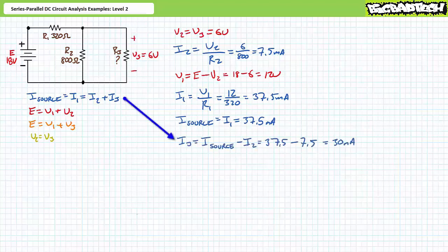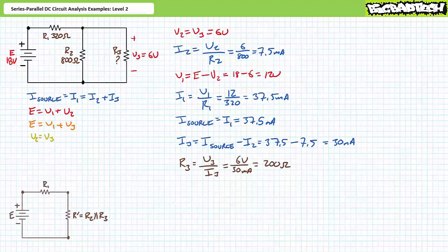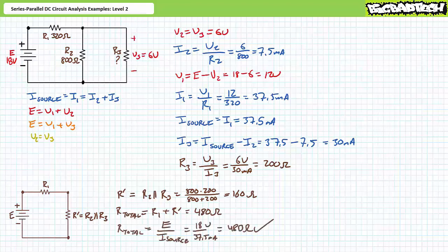An algebraic rearrangement of the Kirchhoff's current law equation solving for unknown current I3 demonstrates that I3 is the remaining 30 milliamps. An application of Ohm's law solving for unknown resistance R3 demonstrates that R3 is 200 ohms. As a means of checking our work, we can take R2 and R3 in parallel — a simplification I'm calling R prime — which has a value of 160 ohms. R prime is in series with R1, presenting a total resistance of 480 ohms. Total resistance equals supply voltage divided by source current, which similarly yields 480 ohms. I've got a reasonable degree of confidence our answers are correct and we can move on to the next illustrated example.